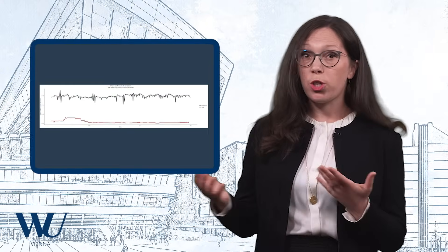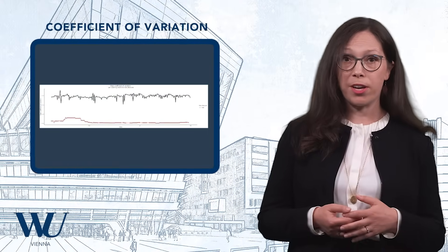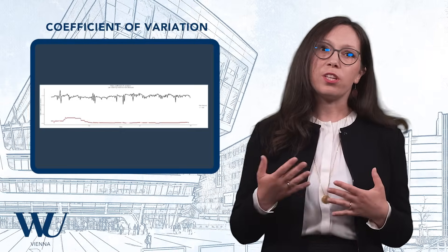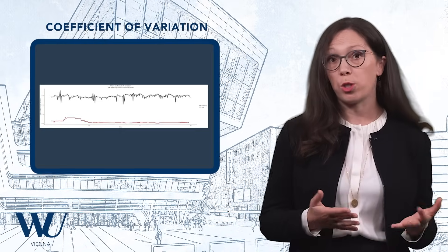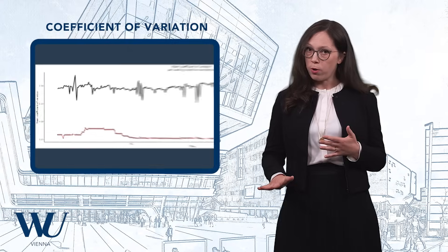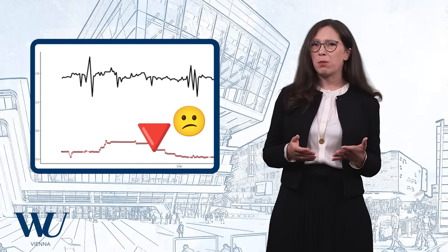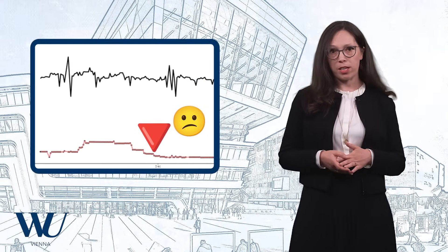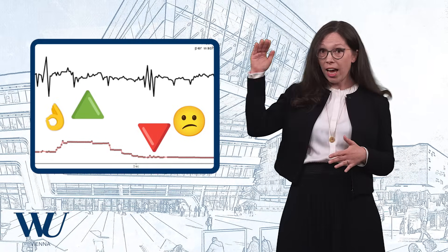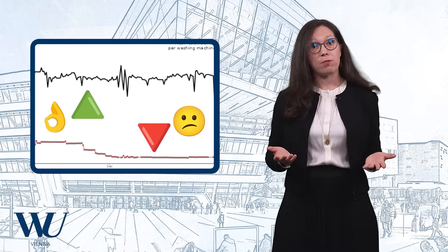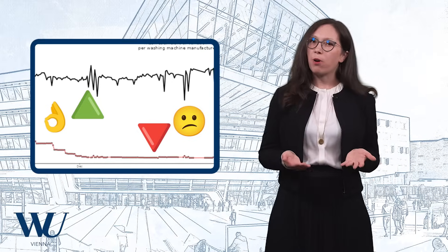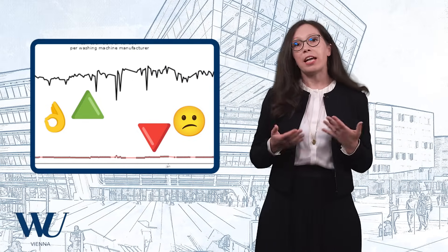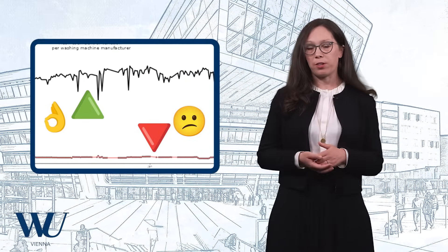The second dashboard shows a metric called the coefficient of variation. Essentially, it shows whether different prices are offered for the same washing machine model. A low coefficient of variation means that prices for that model are rather uniform, perhaps indicating resale price maintenance. A high coefficient of variation means that prices for that model are not uniform, perhaps indicating that prices are individually set by resellers that compete with each other, as it should be.